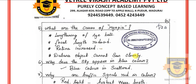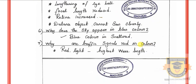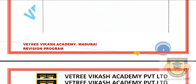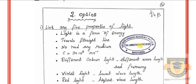What are the causes of myopia? Why does the sky appear in blue color? Why are traffic signals red in color? This is a 5-mark question: List any 5 properties of light.